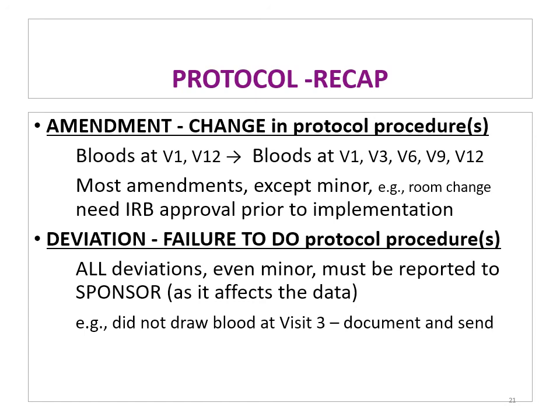This is another reason to ensure everything is written carefully from the start — amendments and changes take time to be reviewed by the IRB. A deviation is a failure to follow a protocol procedure. Even minor deviations must be reported to the sponsor, as they affect the data. For example, if you did not withdraw blood at visit three, the sponsor and the IRB — if there is an audit — will ask why, why it was not documented, or why the patient did not come to that visit. Document everything — documentation will save your practice during your research.